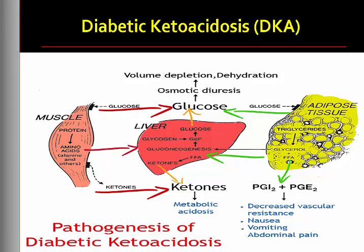Abdominal pain may be present and accompanied by anorexia, nausea, and vomiting. Kussmaul's respirations — rapid, deep breathing associated with dyspnea — are the body's attempt to reverse metabolic acidosis through the exhalation of excess carbon dioxide. Acetone is noted on the breath as a sweet, fruity odor. Lab findings include a blood glucose level of 250 or higher, arterial pH less than 7.3, serum bicarbonate less than 16, and moderate to high ketone levels in the urine or serum.